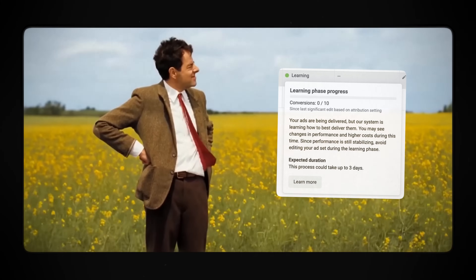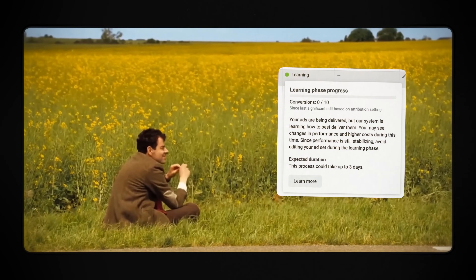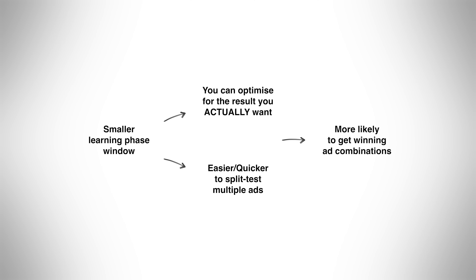Being able to condense that time period means you can get through more tests and more iterations of new ads, targeting options, whatever it is you're looking to test — quicker. That's obviously going to help us get better results over the long run because we're going to learn more, Meta's going to learn more, and having more attempts at ads gives you a greater percentage chance of getting great results. Those two things are a really big shift we can make based on this adjustment to the learning phase.